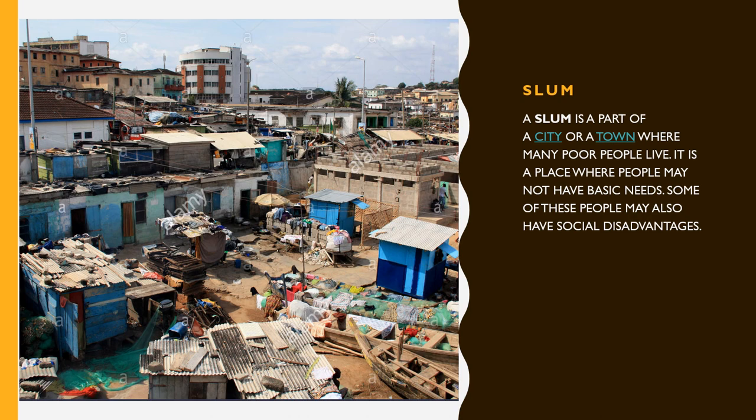The basic needs include food, proper shelter, clothing, and finance — that is, money. People living in these areas have unauthorized permits to build there.